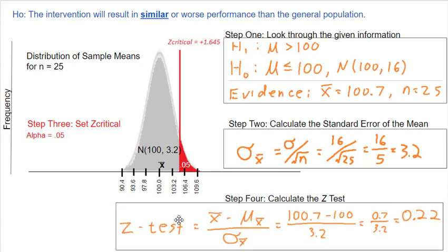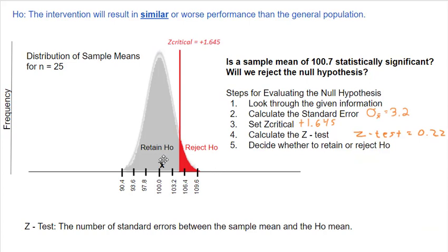Step four: calculate the Z test. That's the sample mean minus the population mean divided by the standard error. In this case, it's 100.7 minus 100 divided by 3.2, or 0.7 over 3.2, which works out to 0.22. That 0.22 tells us the sample mean is 0.22 standard errors above where the null hypothesis expects it to be.